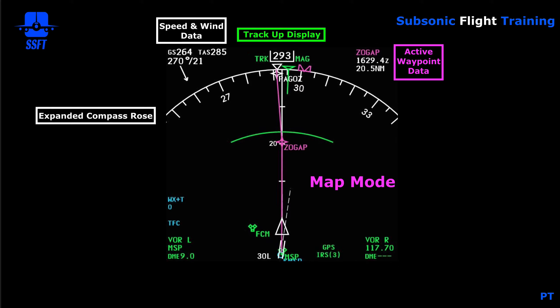We have ground speed and true airspeed. On takeoff, sometimes when you're looking at the PFD you may notice a little flash at 100 knots when the true airspeed starts to be displayed. Ground speed is there through your taxi and takeoff roll, but true airspeed is added at 100 knots. You'll catch it out of the corner of your eye.